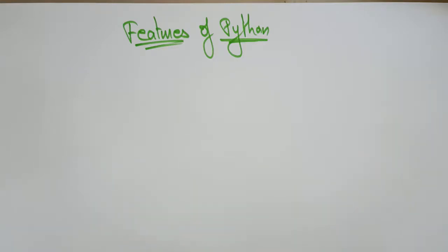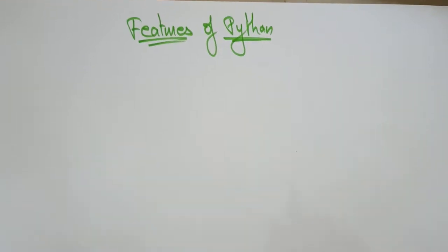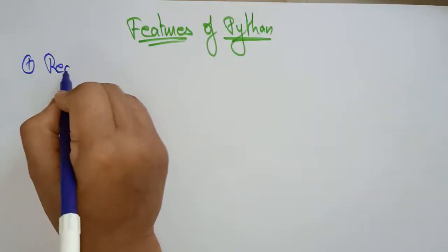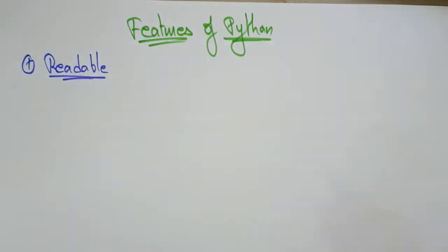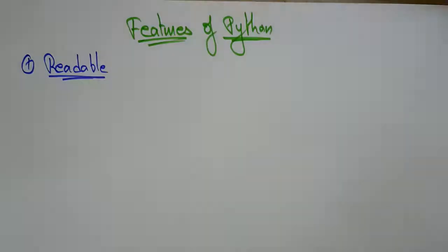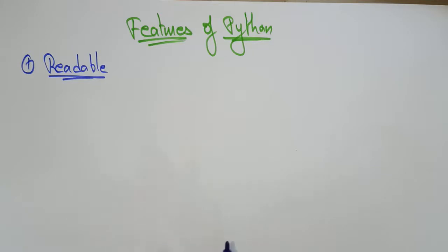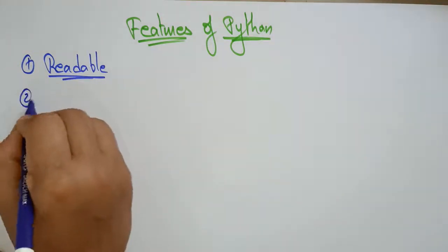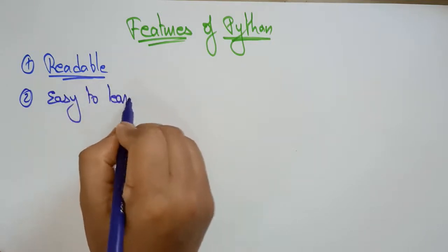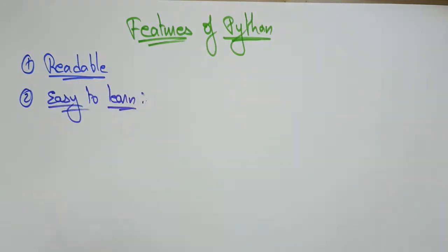Now let's have a look at the features of Python. The first feature is readable. The Python programming language is a readable language — that means it is easy to read. Whatever statements are written in the Python language, those statements are readable, easy to understand, and easy to read.